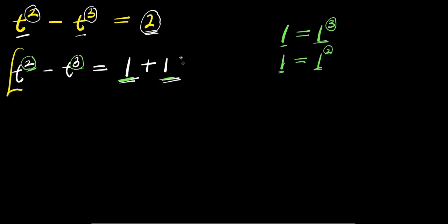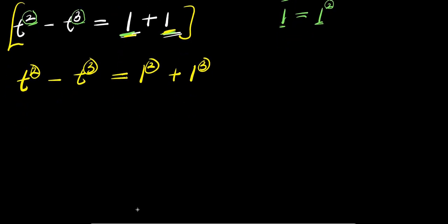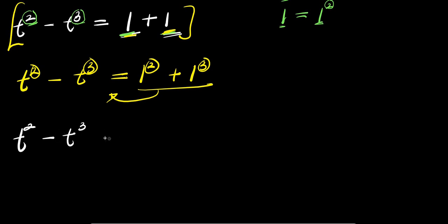Why am I expressing the 2 as 1 power 3 and 1 power 2? Because there is power 2 here and power 3 here — I want the powers to correspond so that I can compare them. So the equation becomes t² minus t³ equals 1² plus 1³. Moving everything to one side: t² minus t³ minus 1³ minus 1² equals 0.